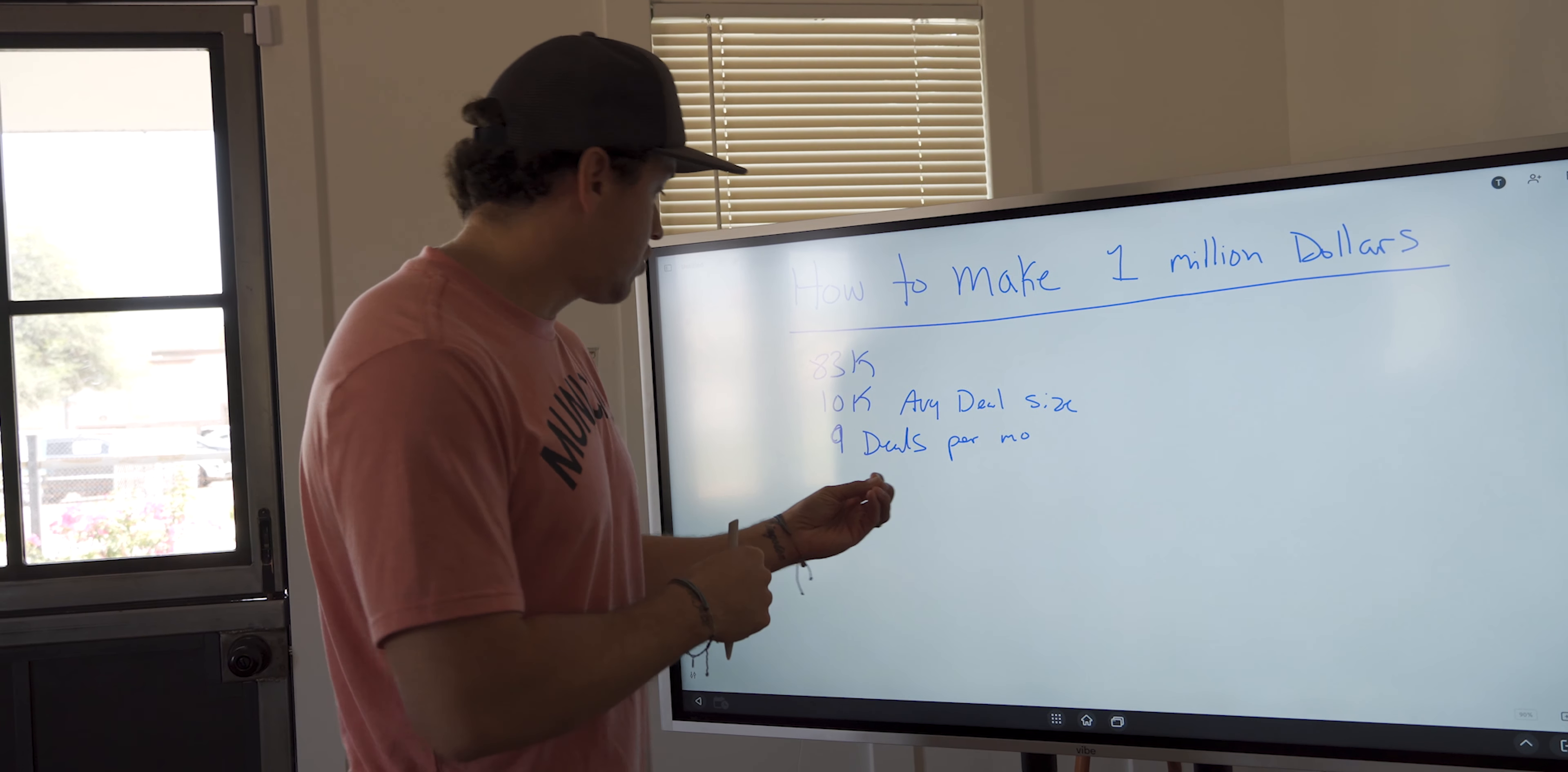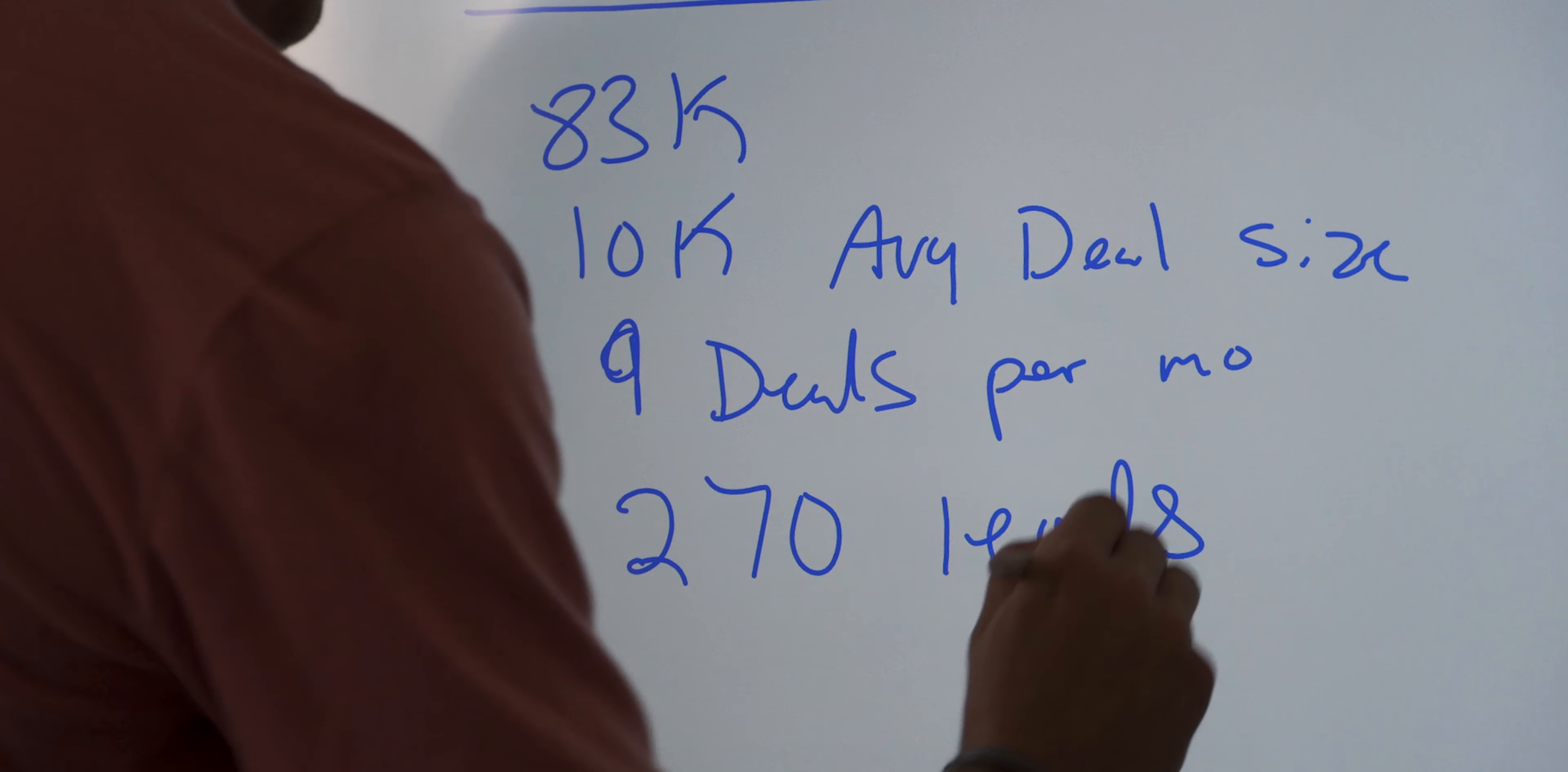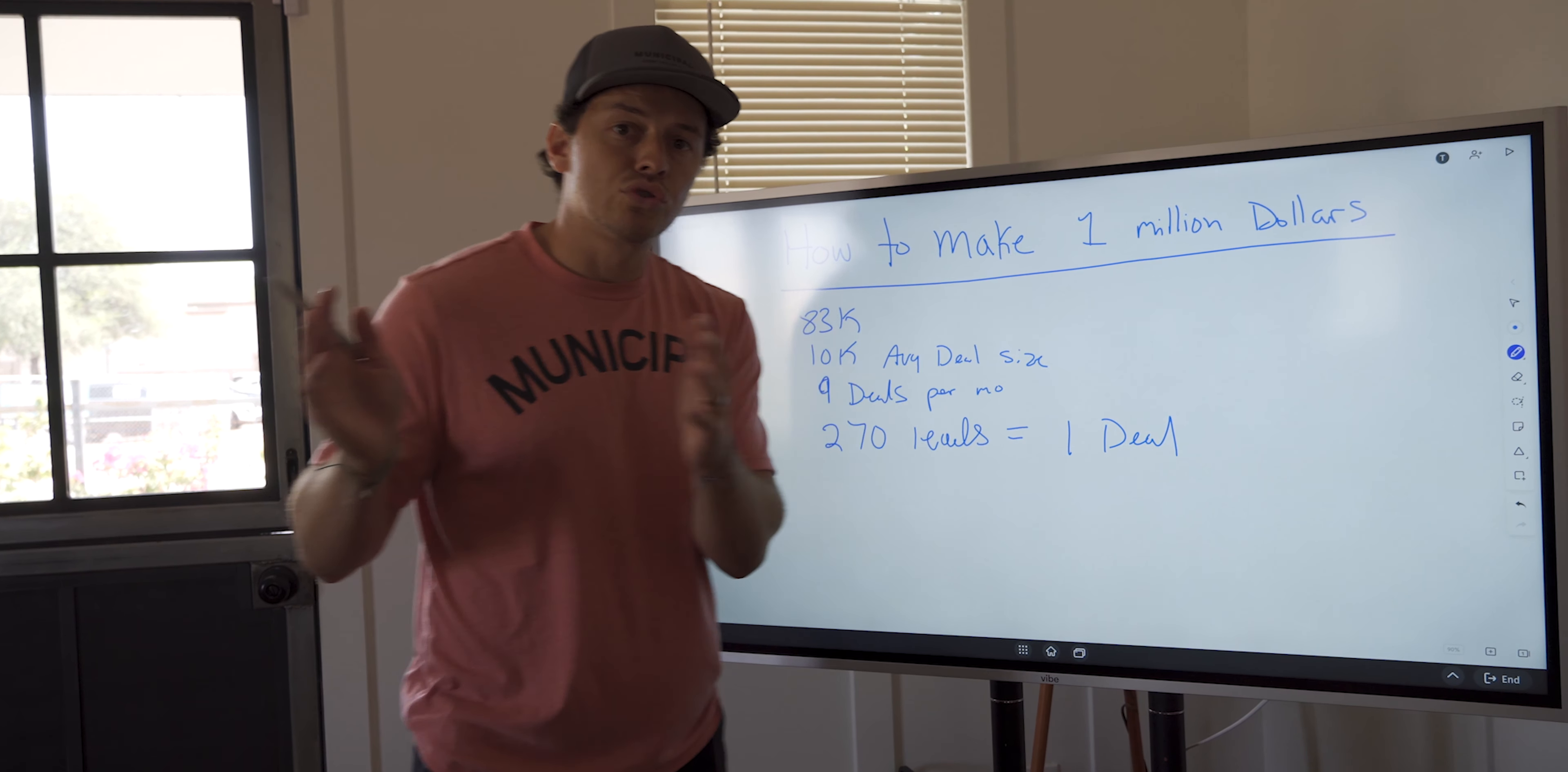So I know for us, we have to look at about 30 deals for us to put something under contract. So if I have to do 30 deals times nine, what's three times nine? Nine, 18, 27. So I need 270 leads and that equals one deal. So that's 30 leads, you guys, equals one deal.